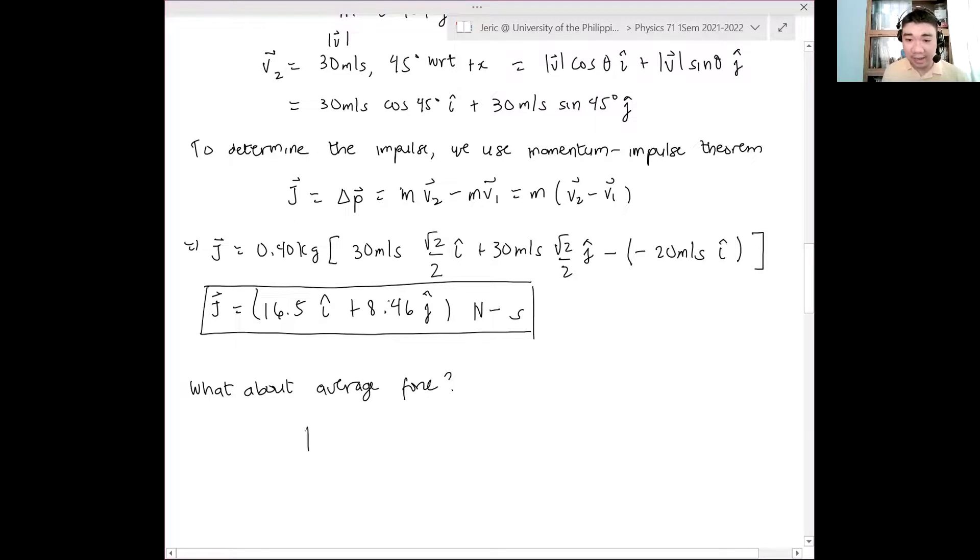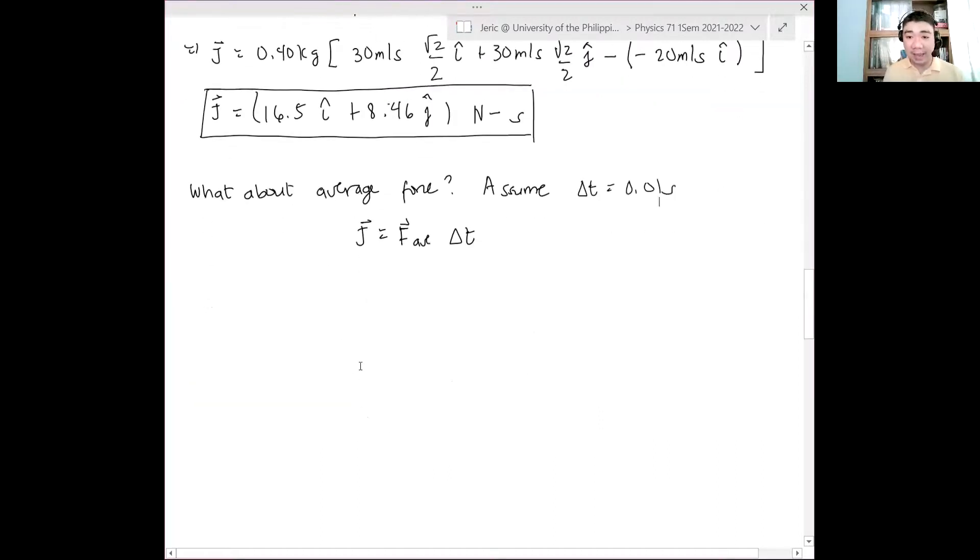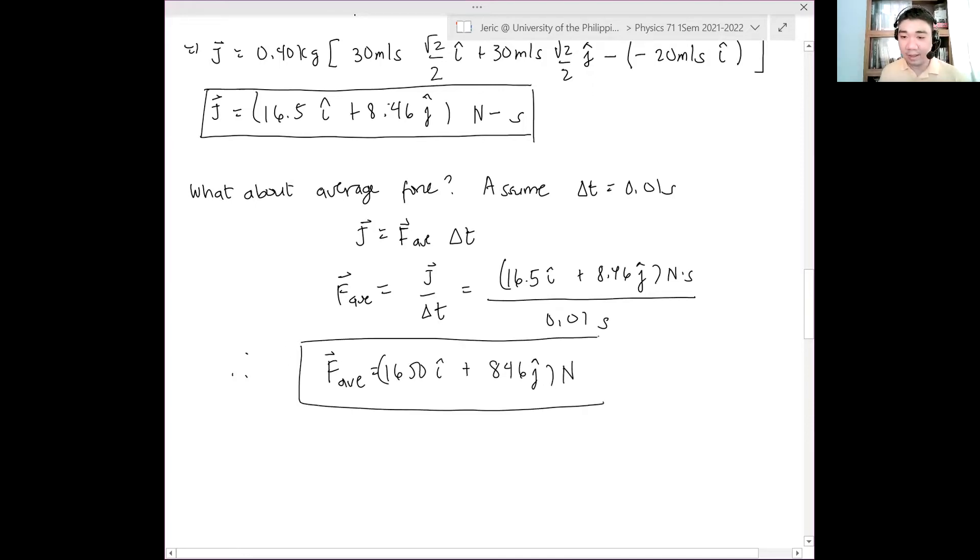The average force is, by the way, J is simply F average times delta t. If we assume that delta t is about 0.01 seconds, what will happen is that the average force F average is equal to J over delta t which is simply 16.5 i hat plus 8.46 j hat all in Newton seconds divided by 0.01 seconds. And the answer therefore is that the average force exerted by the foot on the soccer ball is about 1650 i hat plus 846 j hat quantity Newtons.